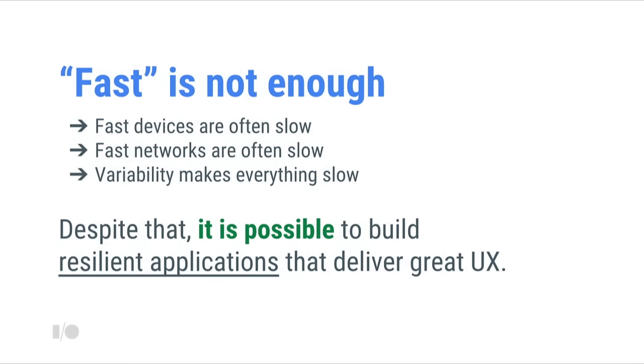There is no special carve-out for "the user is on a 4G network" or "the user has the latest flagship phone." It doesn't matter what device you have or what network you're on — these things can and do happen. The message here is that fast is not enough. Fast devices are often slow. Fast networks are often slow. Variability in performance — and this is the critical aspect — makes things feel slow. Despite our best intents and best practices, variability is really what kills the user experience, because users don't get reliable performance from the application.